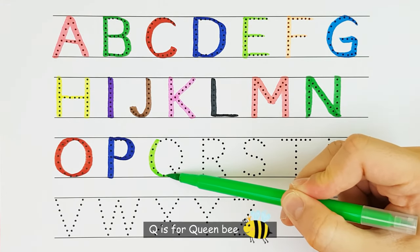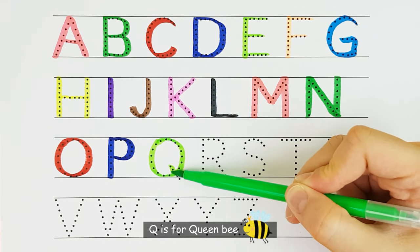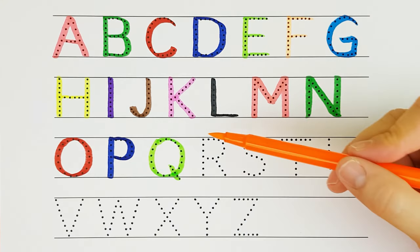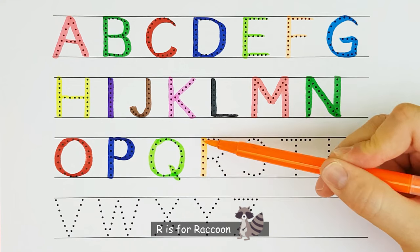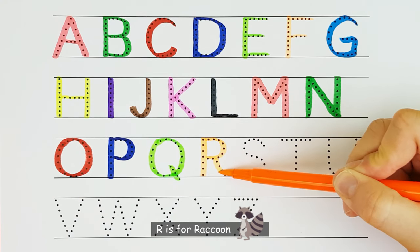Q. Q is for queen bee. Q. R. R is for raccoon. R.